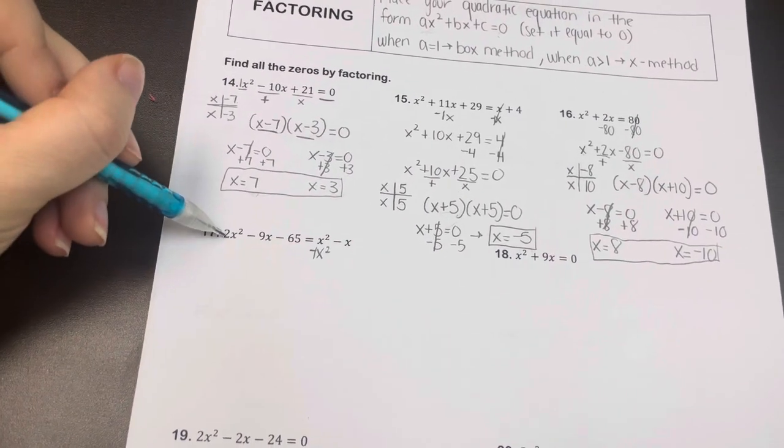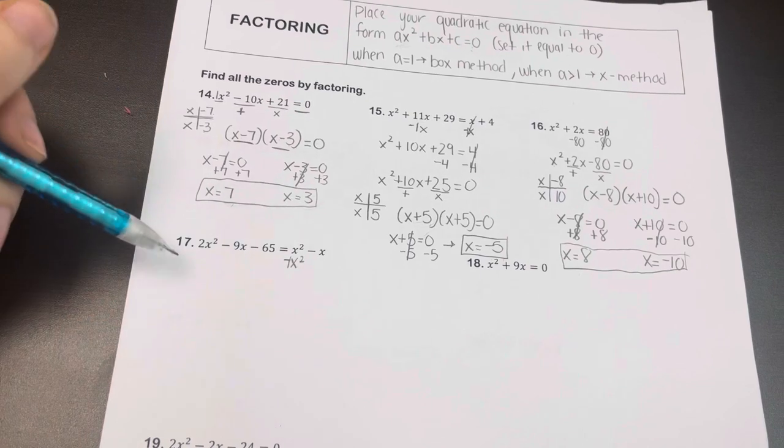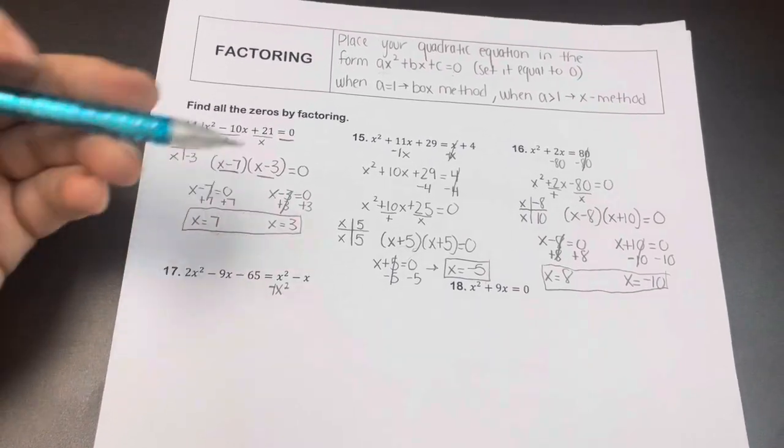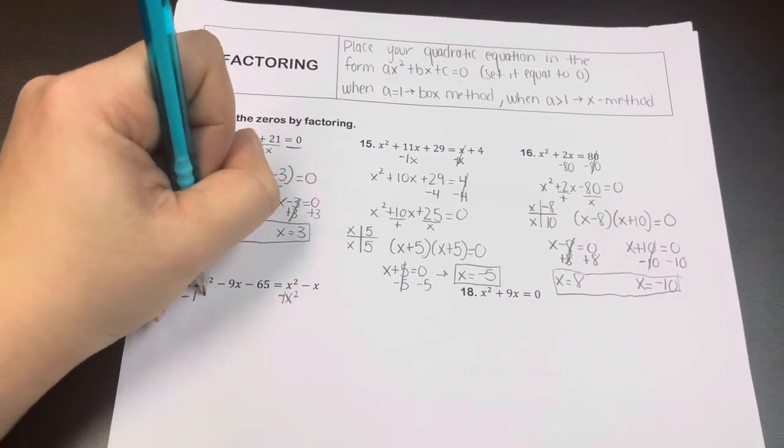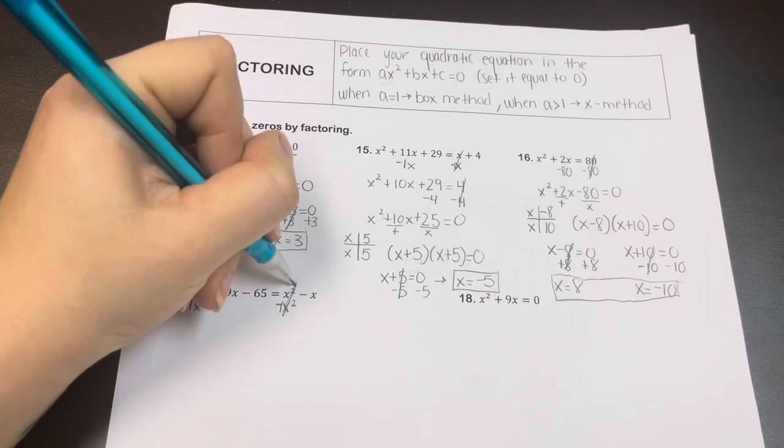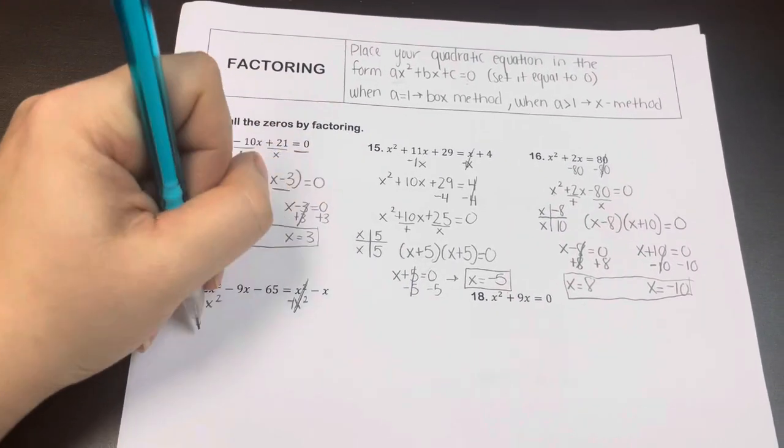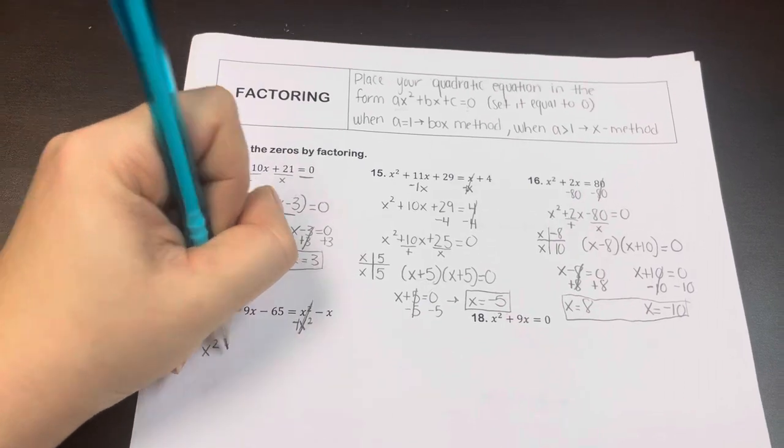And on the left side, the term that I can combine that x squared with is this one, because this one also has an x squared. So I'm going to subtract a 1x squared here. So a 2x squared minus a 1x squared is just a 1x squared, or just an x squared.